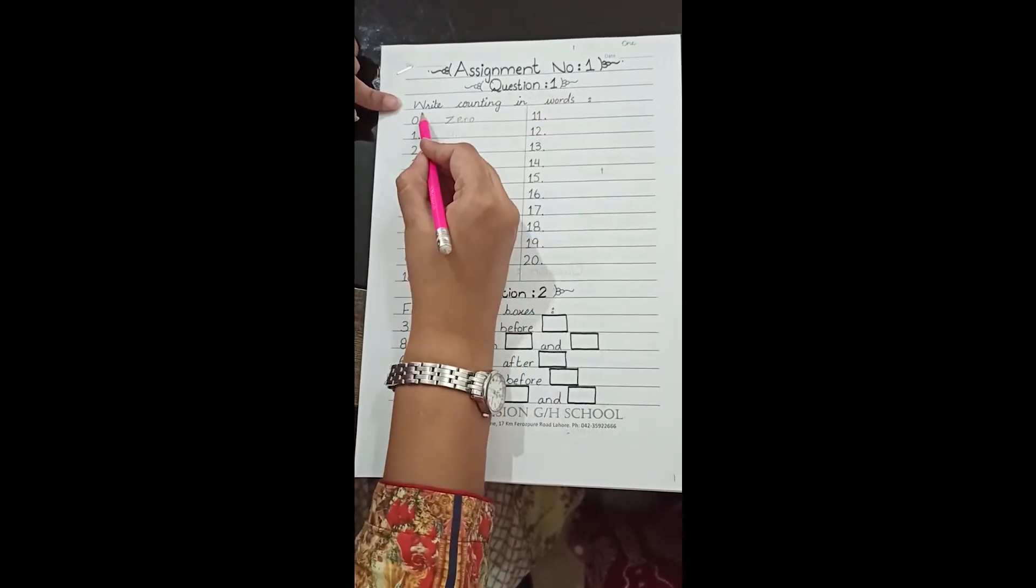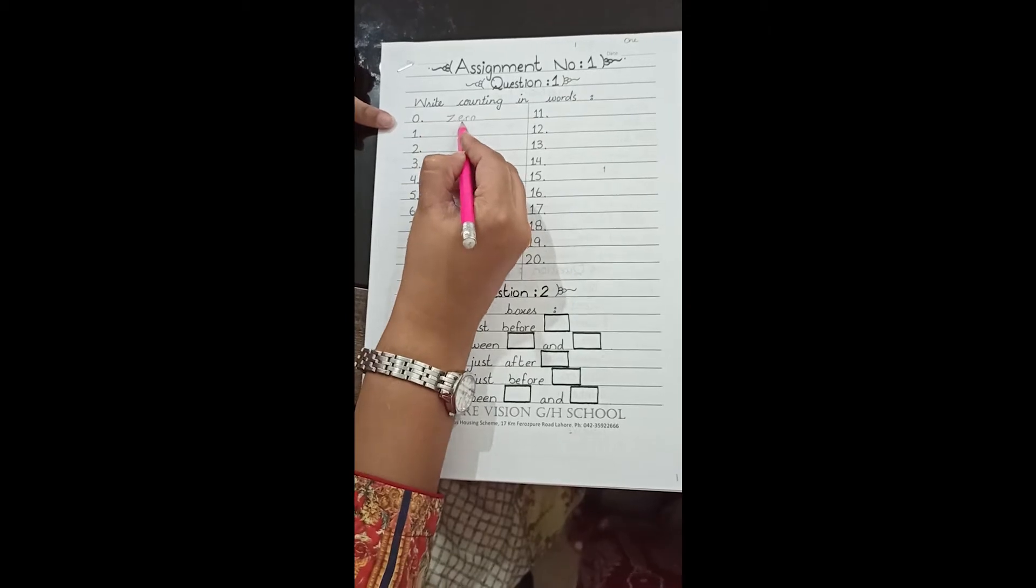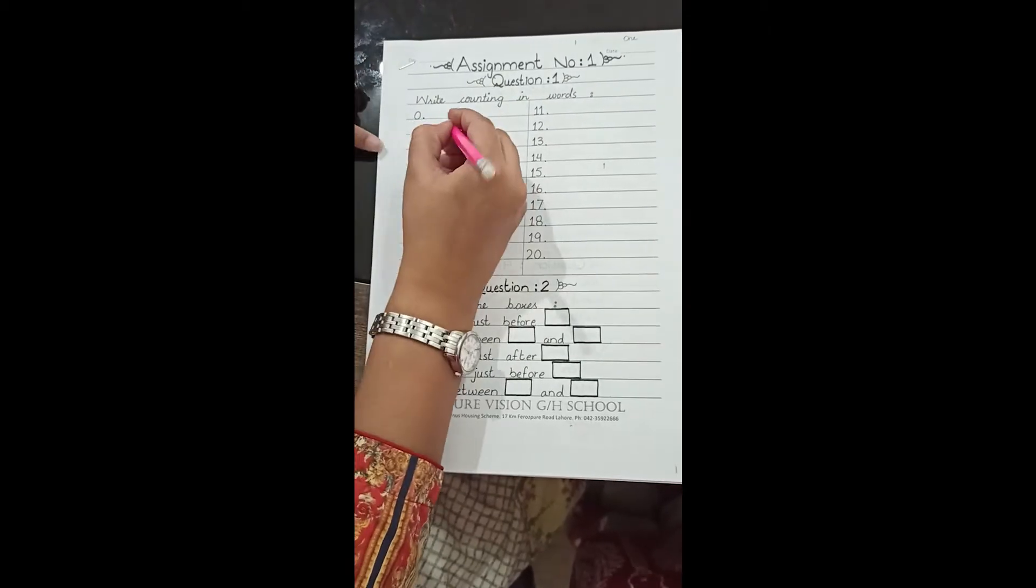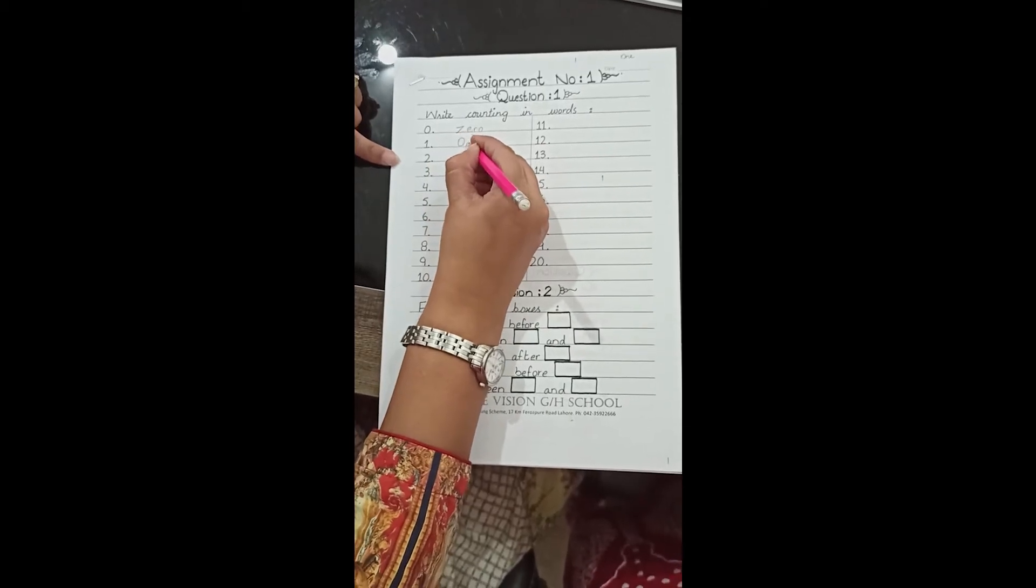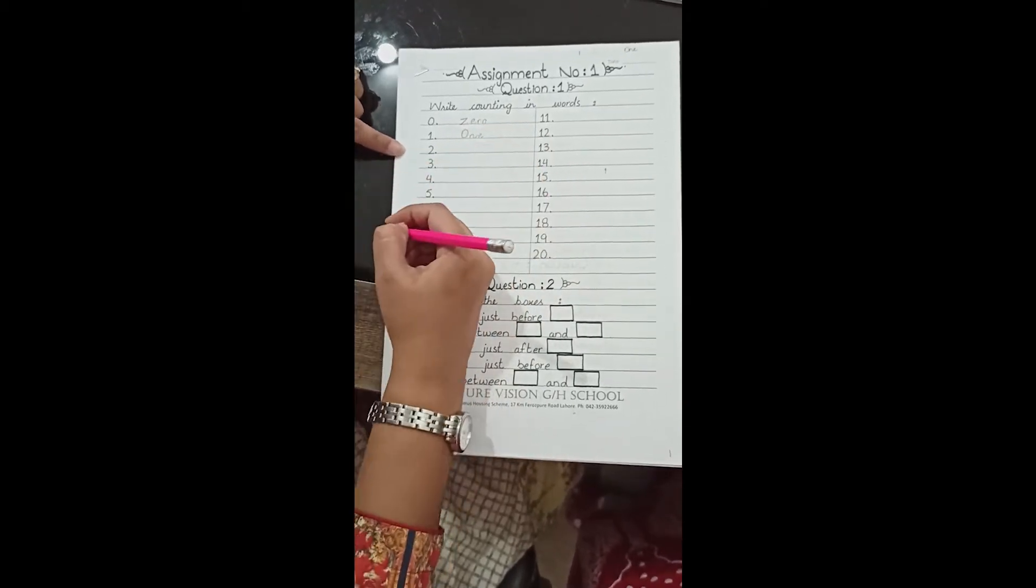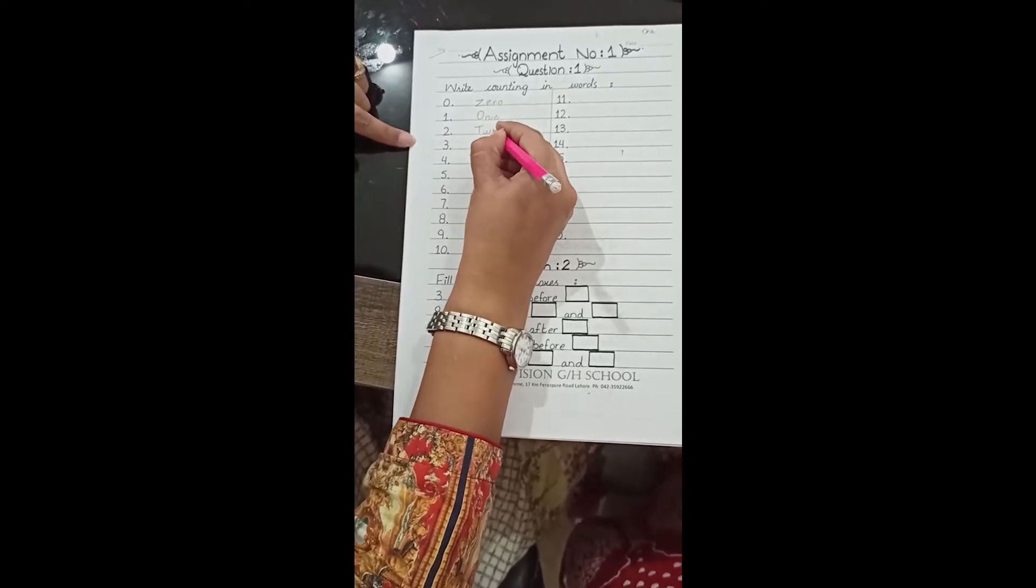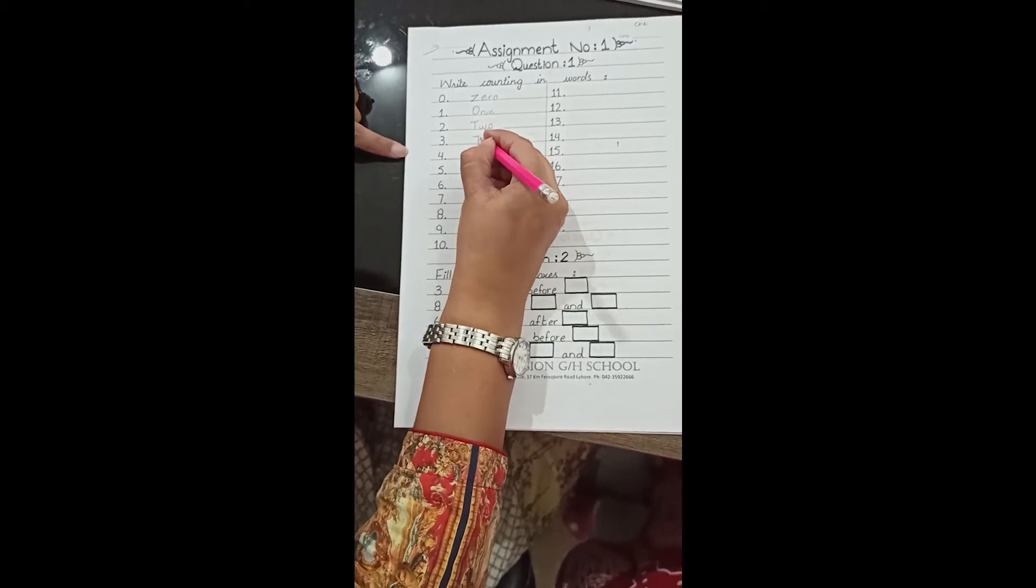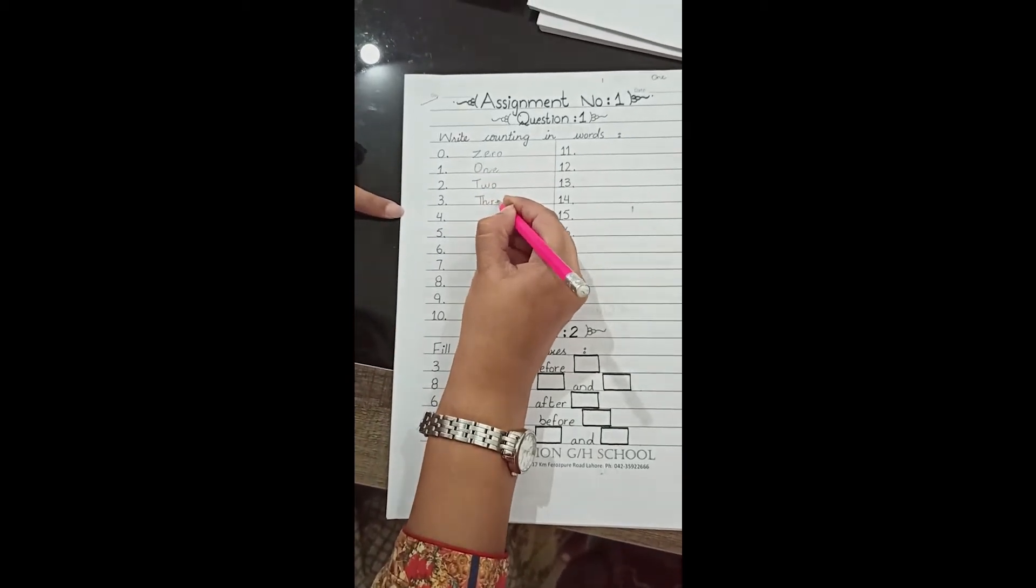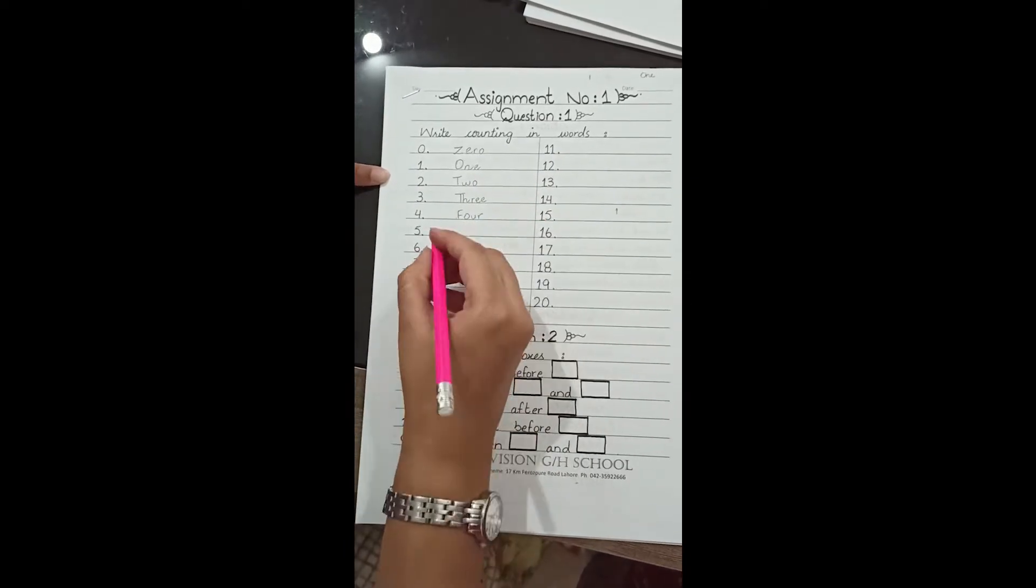Question number 1: Write counting in words. Zero: z-e-r-o, 0. One: o-n-e, 1. Two: t-w-o, 2. Three: t-h-r-e-e, 3. Four: f-o-u-r, 4.